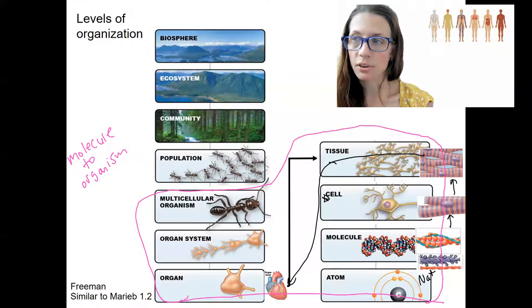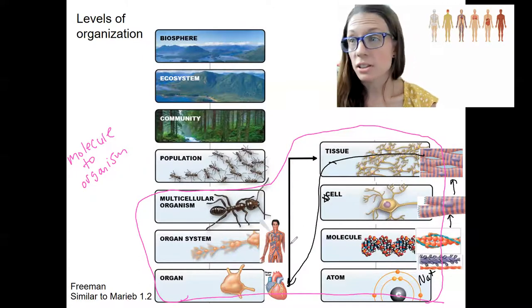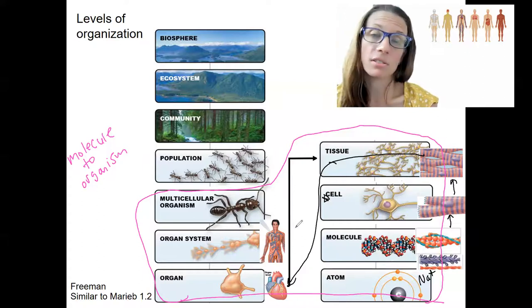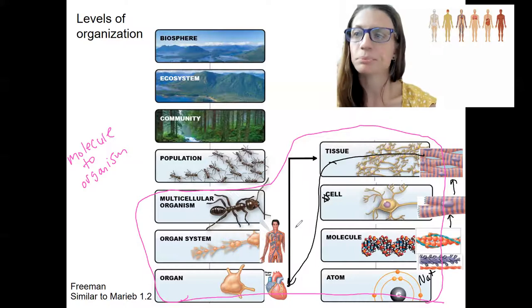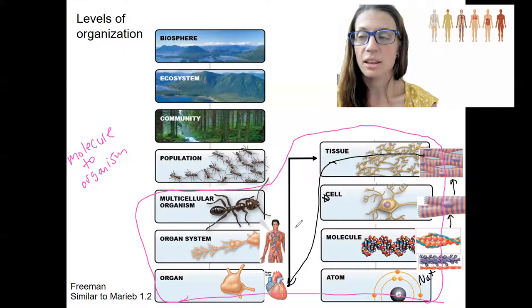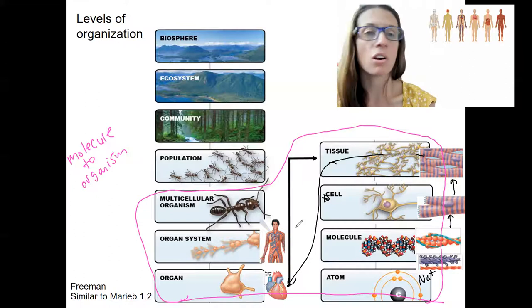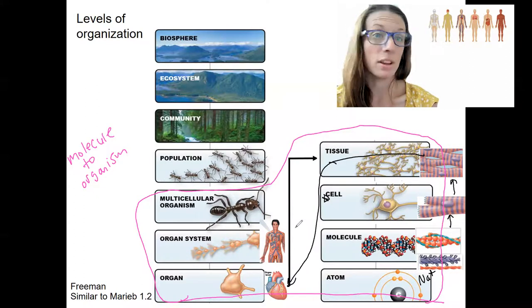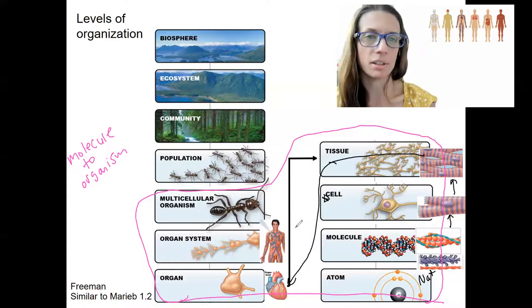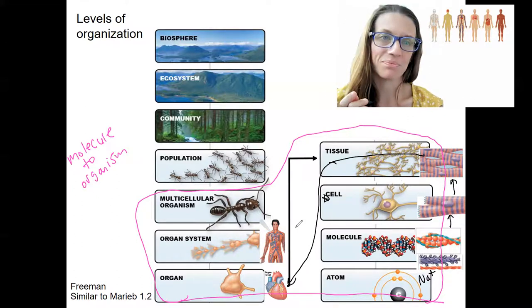Then, multiple organs are going to come together to form organ systems. So for our example here with the heart, this is going to be the cardiovascular system. The cardiovascular system is composed of the heart and the blood vessels that connect the heart to the rest of the body. Organ systems work together to carry out a body process in a changed environment. So the heart, along with the blood vessels, acts to carry nutrients, waste, gases throughout the body. The heart can't do that alone.